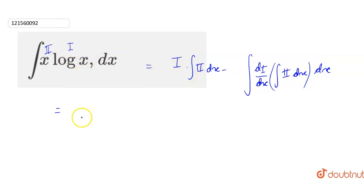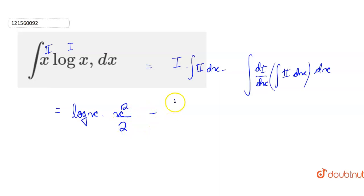So our first function is log(x). So log(x) into integration of the second function. What is integration of x? It is x² upon 2 — simply the power rule. Minus integration of d/dx of the first function, so differentiation of log(x).